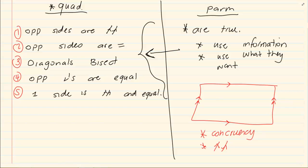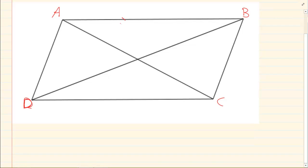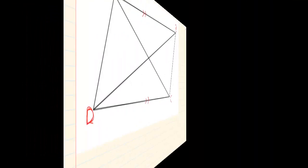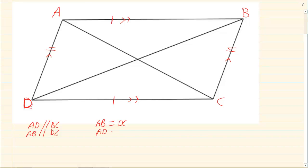Now let us discuss the parallelogram. If you look at the parallelogram and it is given that this is a parallelogram, there are certain qualities that it has. Number one, the opposite sides are parallel — that is how come it is one of the reasons to say a quadrilateral is a parallelogram. Number two, the opposite sides are equal. So AD is parallel to BC, or AB is parallel to DC. And AB equals DC, while AD equals BC.